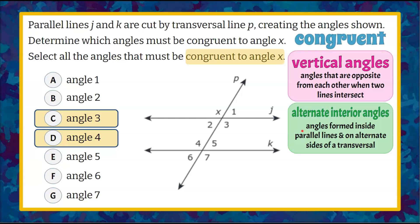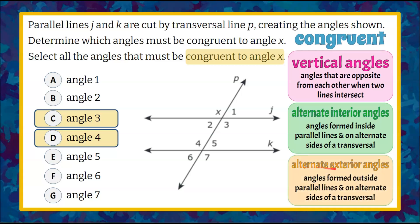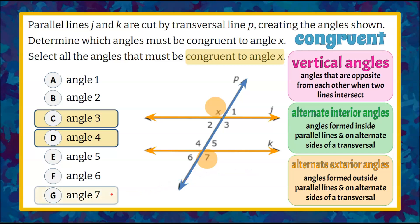Let's talk about a third type: alternate exterior angles, which are angles formed outside parallel lines and on alternate sides of the transversal. We have our parallel lines intersected by our transversal, and we're going to focus on our exterior angles — angles X, 1, 6, and 7. We want to know which one is congruent to angle X, so we go on the alternate side of the transversal and on the outside — that would be angle 7. So angle X and angle 7 are alternate exterior angles, and they are congruent to each other.